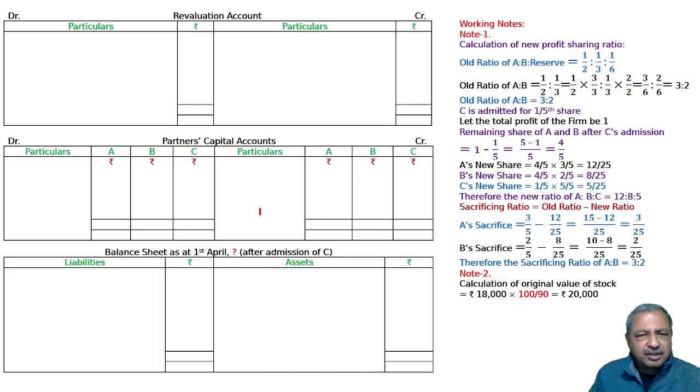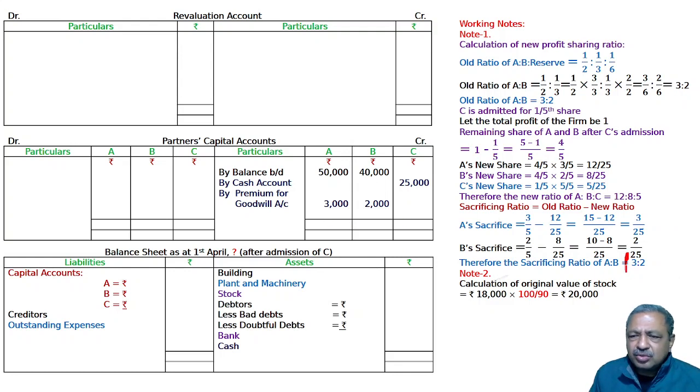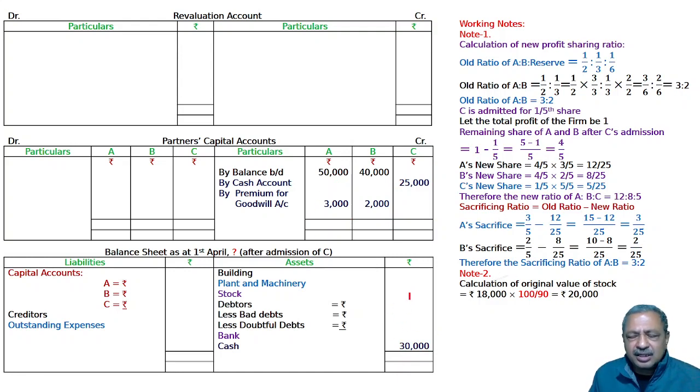Now go for revaluation account, partners' capital account and balance sheet. I told you, making all three together is also not wrong. Copy the balance sheet carefully. In capital account write balance b/d, capital balance, A and B's 50,000 and 40,000. Adjustment A: C brings in 25,000 towards his capital by cash account 25,000. Adjustment 2: C also brings in 5000 for one-fifth share of goodwill, for premium for goodwill. This should be distributed in sacrificing ratio 3 is to 2. And this cash becomes 25 plus 5,000. So our bank is 5000. This should be written here, you can write cash separately. If we do bank here, we can add 30,000 to bank. For now, written separately. Or by bank and add to bank, both are equally correct.